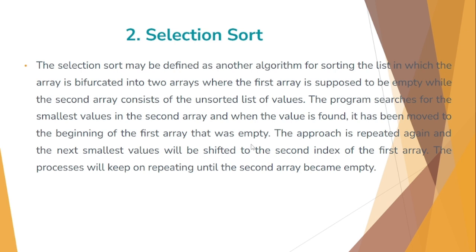The program searches for the smallest value in the second array. And when the value is found, it has been moved to the beginning of the first array that was empty. The second array will choose the smallest value and it will be removed from the second array. The approach is repeated again. The next smallest value will be shifted to the second index of the first array. The process will keep on repeating until the second array becomes empty.